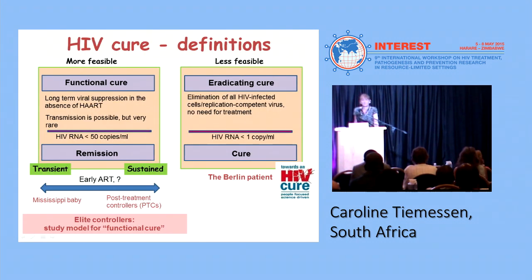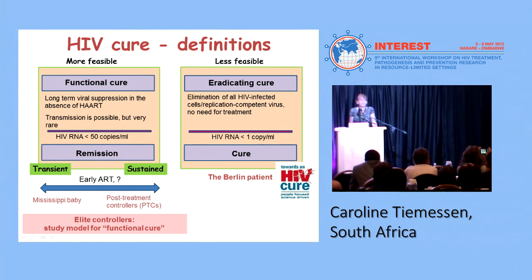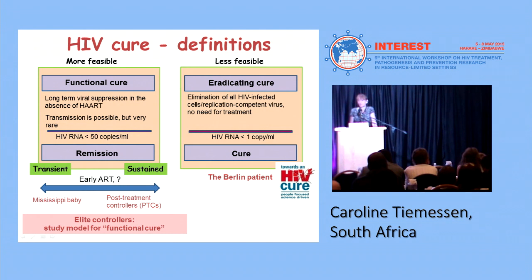Factors such as cost, availability, adherence and drug resistance, the consequences of residual inflammation, long-term toxicities, as well as stigma and discrimination highlight the need to continue to strive for curative interventions. So first, just to describe the definitions: you have probably heard the description of functional cure or remission, which describes long-term viral suppression in the absence of highly active antiretroviral treatment.